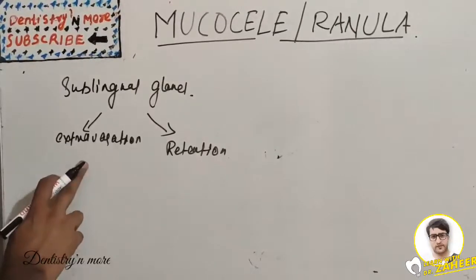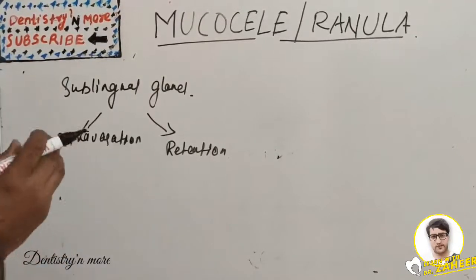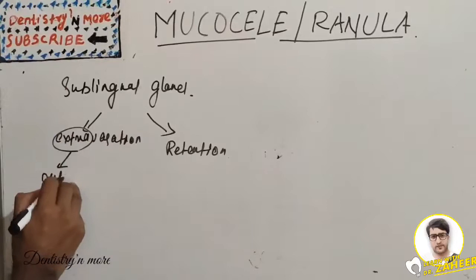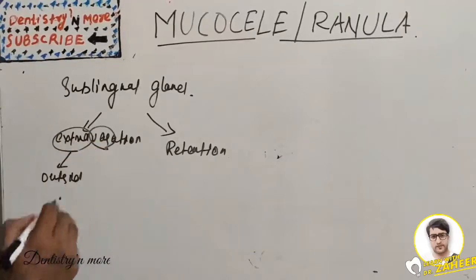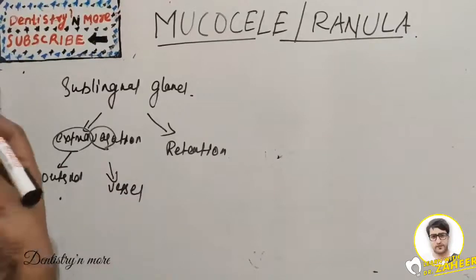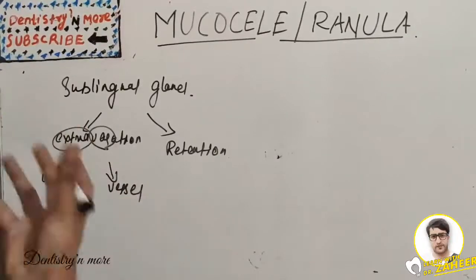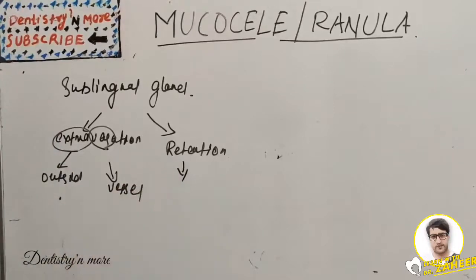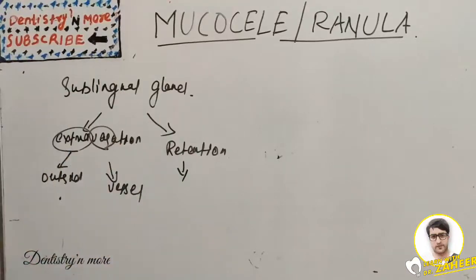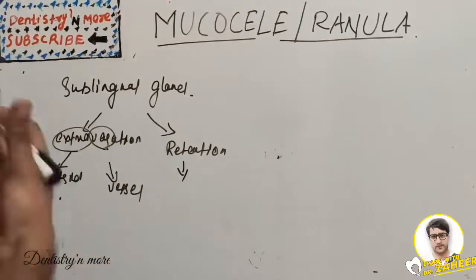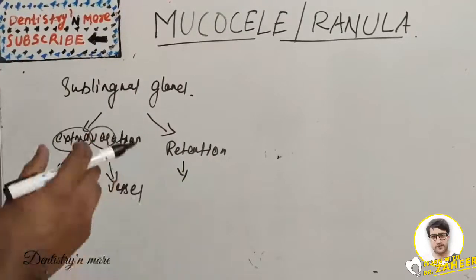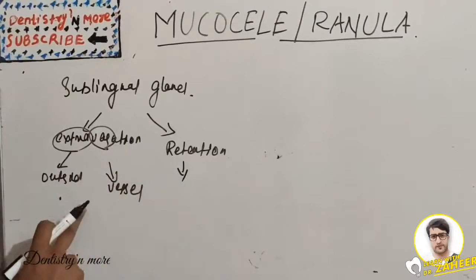Extravasation is the leakage of fluid from the ducts or acini into the surrounding tissue — 'extra' means outside, 'vasa' means vessel — so fluid leaks outside the vessel and is collected into the surrounding tissue. Retention, on the other hand, involves a narrowed ductal opening that cannot adequately accommodate the exit of saliva produced, leading to ductal dilation and surface swelling. This is a less common phenomenon.